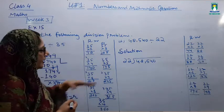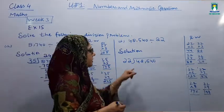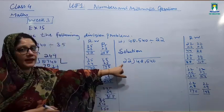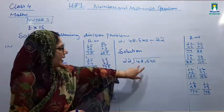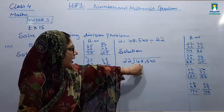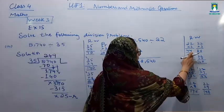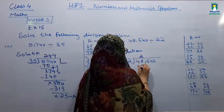48,540. Again, we have 5 parts divided. We divide 4, 8, 5, 4, 0. The most important number is 4. 4 is less than 22. We add 8 with 4, and this becomes 48. Now, 48 in 22 table? No.